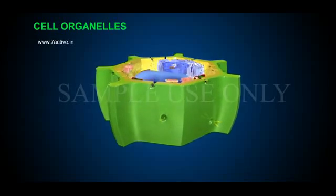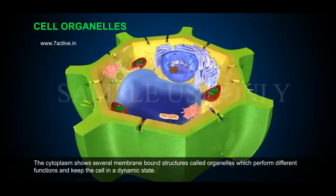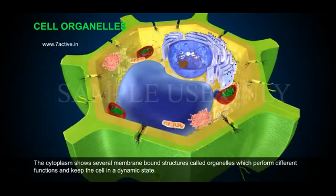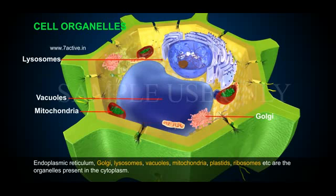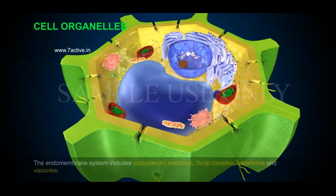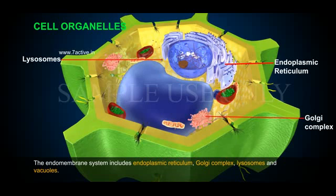Cell Organelles: The cytoplasm shows several membrane-bound structures called organelles which perform different functions and keep the cell in a dynamic state. Endoplasmic reticulum, Golgi, lysosomes, vacuoles, mitochondria, plastids, ribosomes, etc. are the organelles present in the cytoplasm. The endomembrane system includes endoplasmic reticulum, Golgi complex, lysosomes and vacuoles.